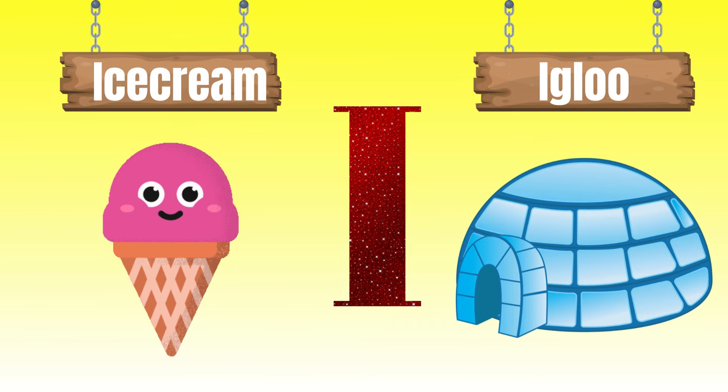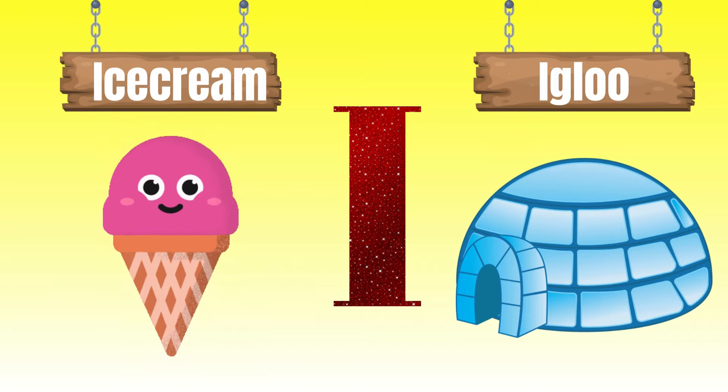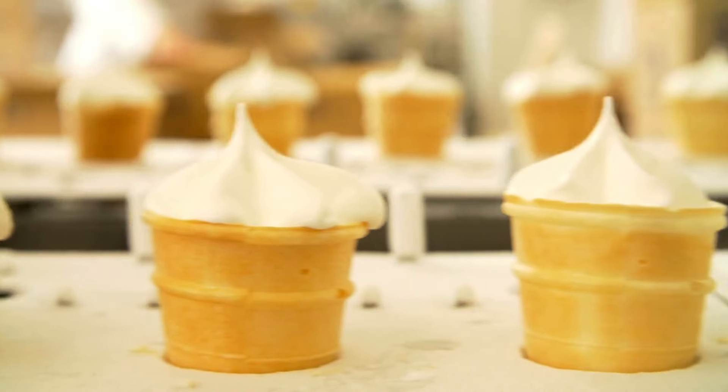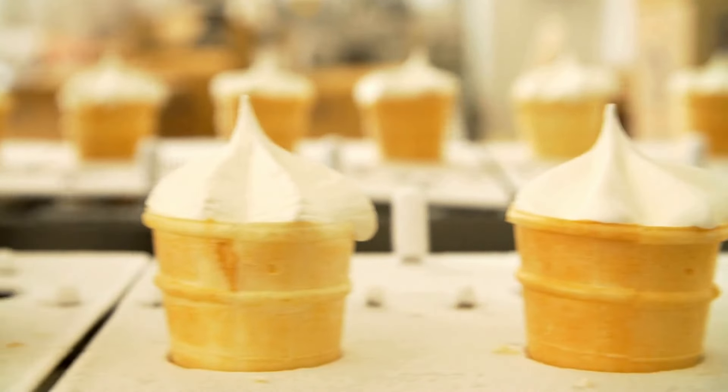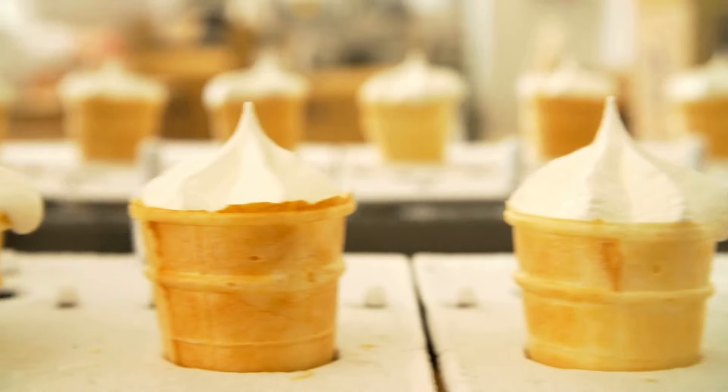I is for ice cream. I is for igloo. Ice cream. Igloo. E, e.